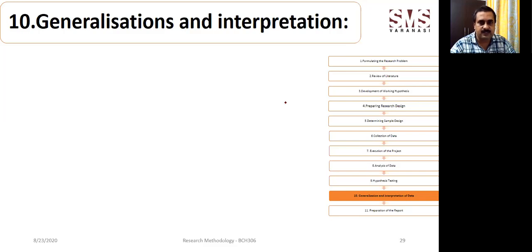As we are covering the research process, we are going to cover generalization and interpretation of data. This means whatever hypothesis testing results have come, on the basis of that we are going to generalize the result. This is our 10th step of the research process.